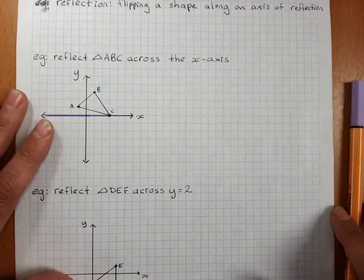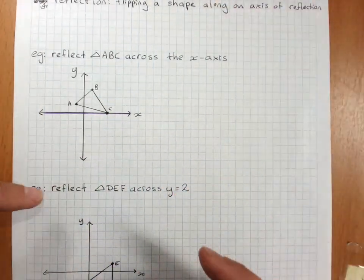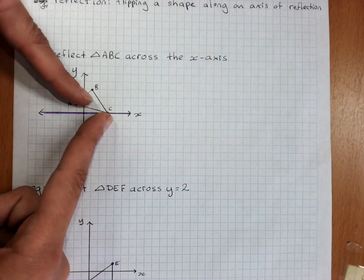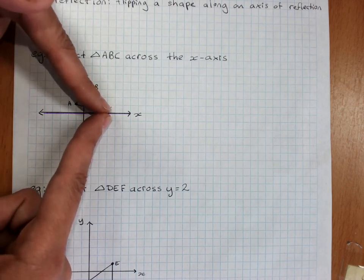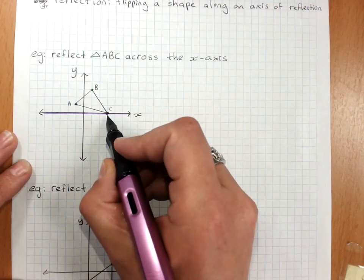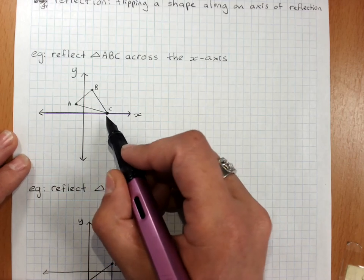Now, when you're looking at a mirror, if you touch a point on the mirror, it looks like the reflection is touching the mirror as well. What that says is, this point C, where it's touching the mirror, the x-axis, isn't going to go anywhere.